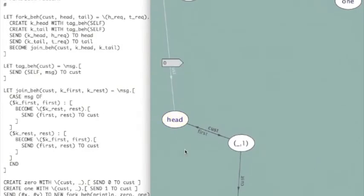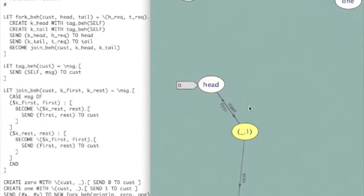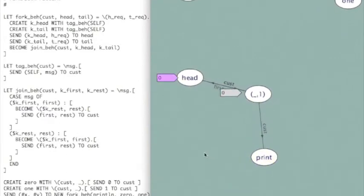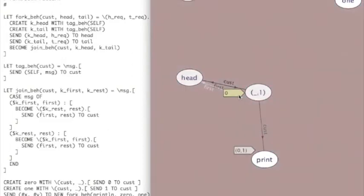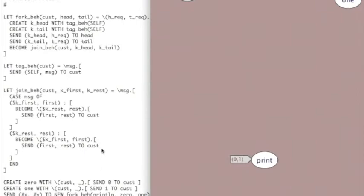So we can walk through the same process where zero sends a message. Pull it out here where we can see it better. That zero gets processed and sends that message to the original customer, which was print. Now what I've shown by some of these relationships and actors fading out of existence is,